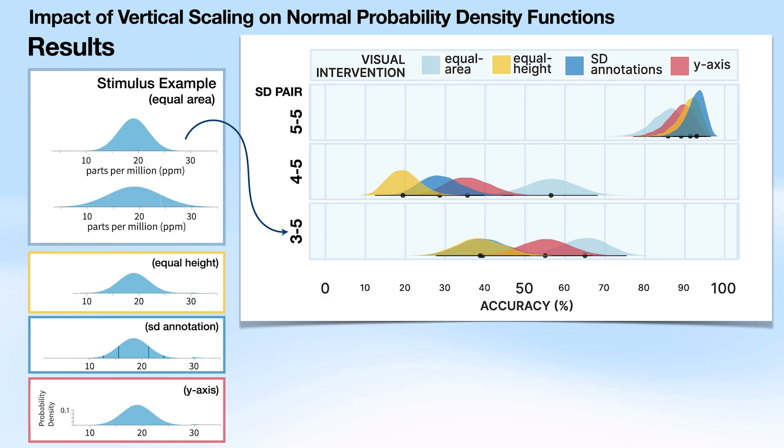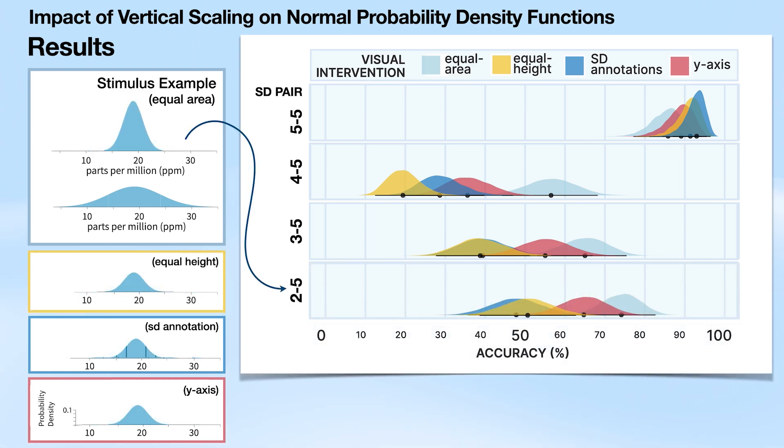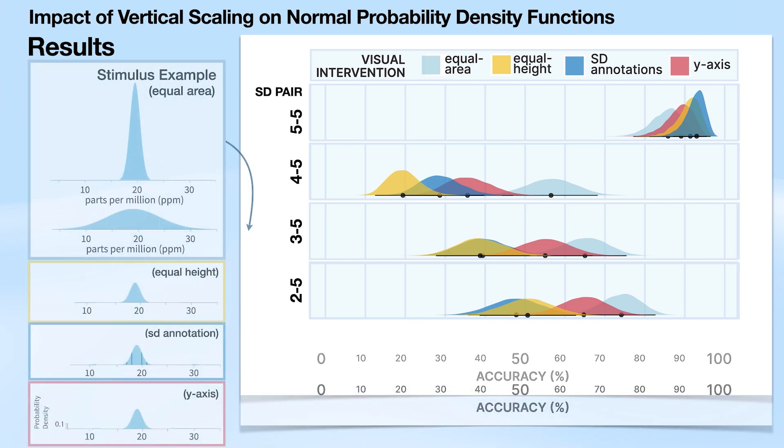When we go ahead and we do the same thing for a standard deviation pair of five versus three, we find a very similar pattern. Everything's shifted slightly over to the right, so everything's slightly more accurate, but still equal area PDFs, which is this light blue PDF, are the most accurate, and equal height are the least accurate. And we see that this pattern continues when we have participants comparing standard deviations of two and five and of one and five.